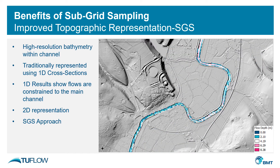With subgrid sampling we can utilize the same 2D cell size as before, the same speed of simulation, but still represent the topographic detail. By doing so we represent the topographic detail within the channel correctly, we better represent the channel capacity, and we get results more in line with what we would expect — matching the 1D results.